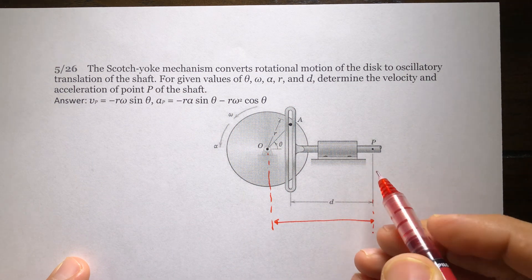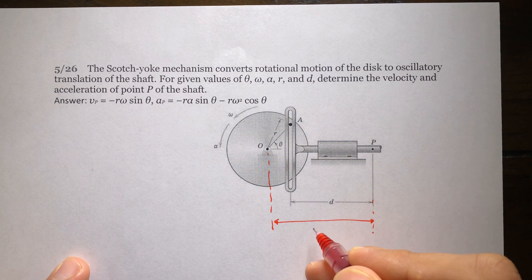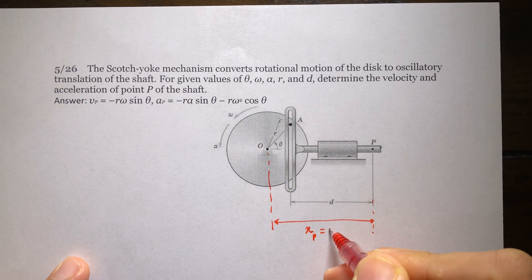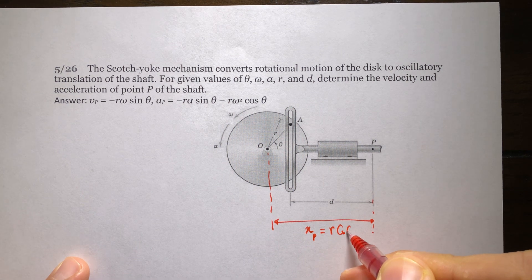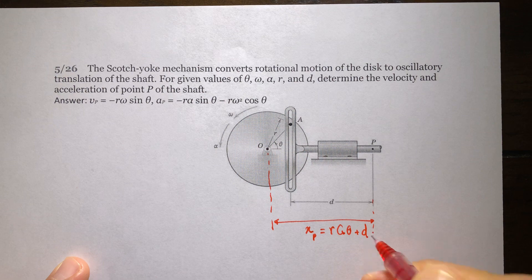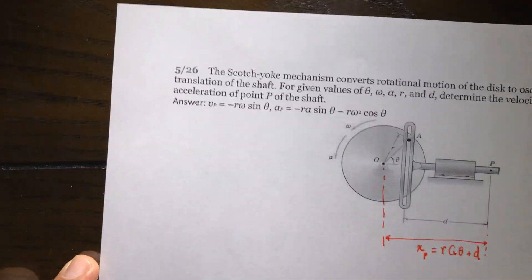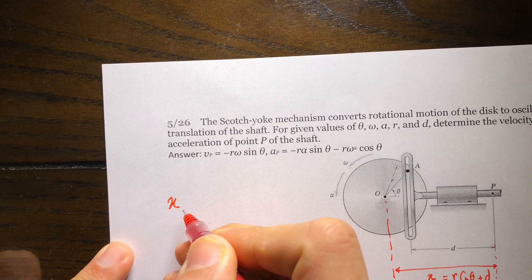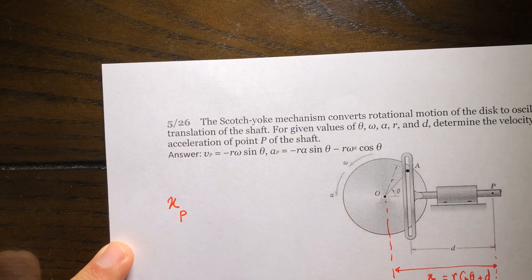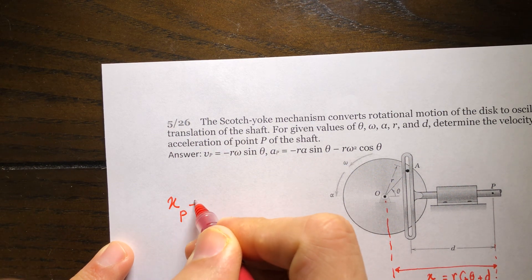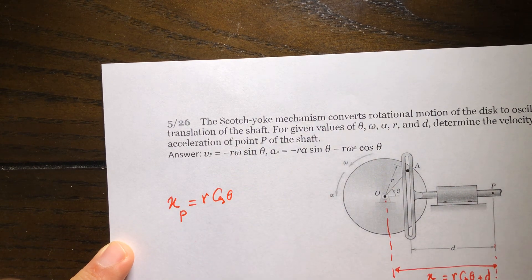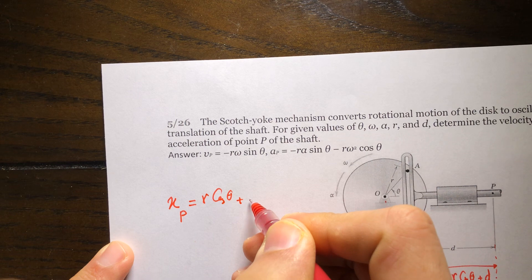So the location of P, if I call it X of P, is going to be R times cosine of theta plus D. The location of point X of P is equal to R times cosine of theta plus constant D.